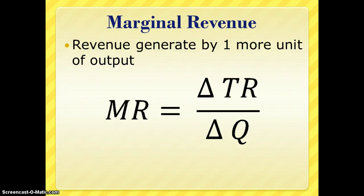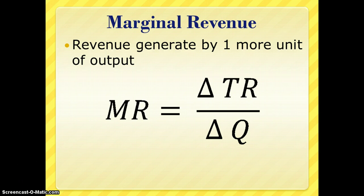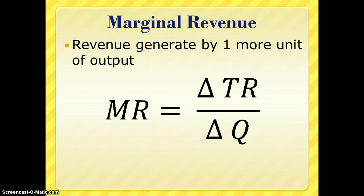One thing that comes with revenue is marginal revenue — that's the additional revenue created by selling one more unit of output. In perfect competition, marginal revenue equals price because everyone pays the exact same price. More generally, any change in total revenue given a change in output gives you your marginal revenue.